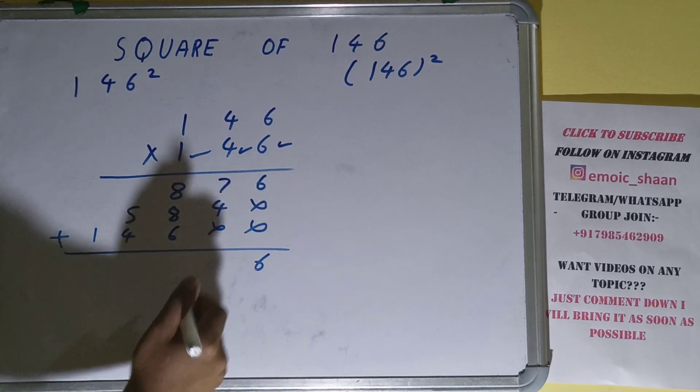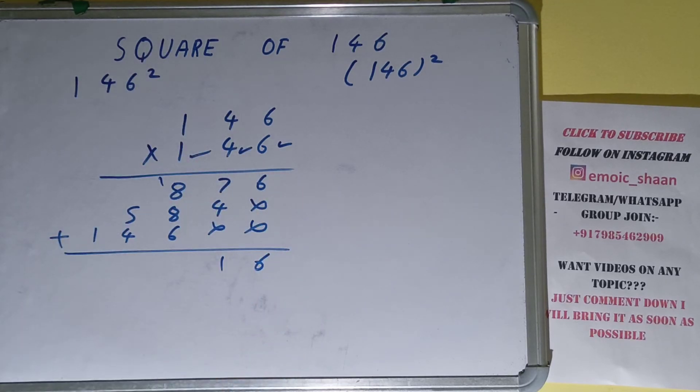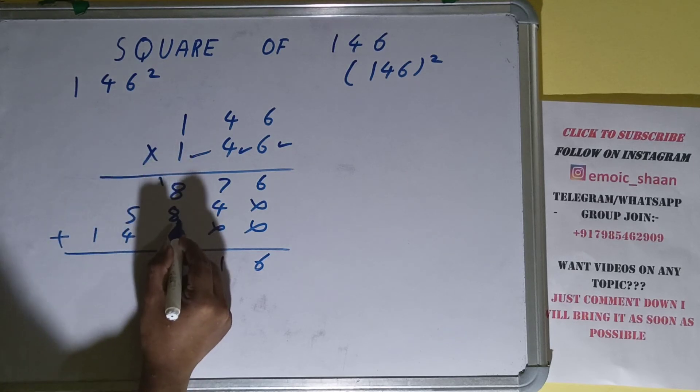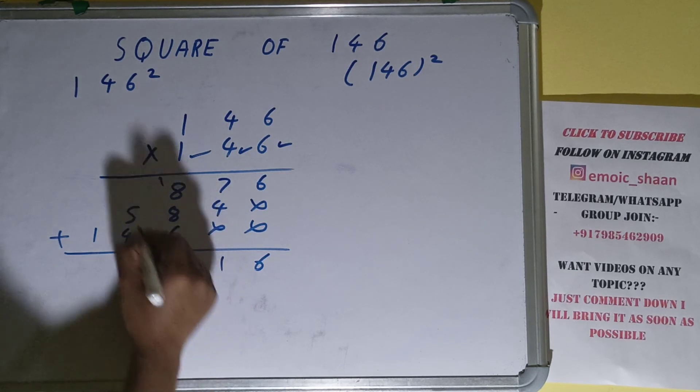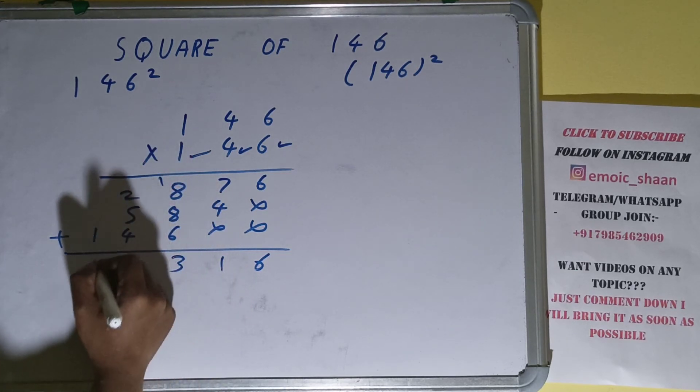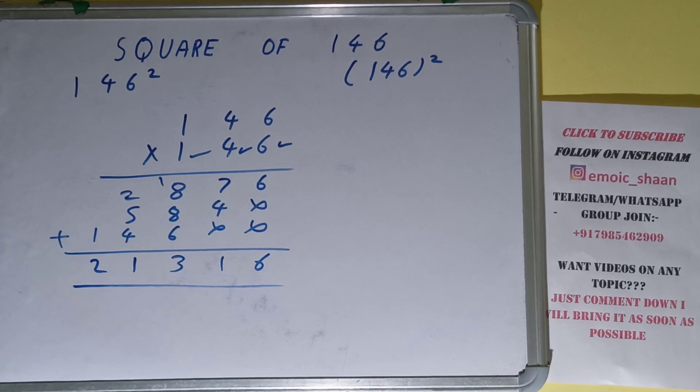7 plus 4 is 11, one down, one carry. 9 plus 8 is 17 plus 6 is 23, three down, two carry, one carry. The answer will be 21,316 - that will be the square for the number